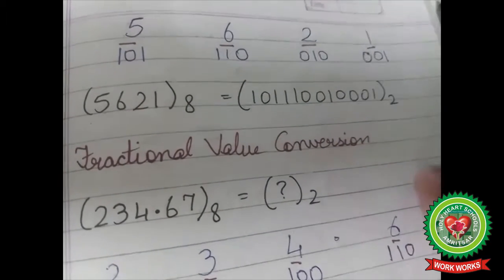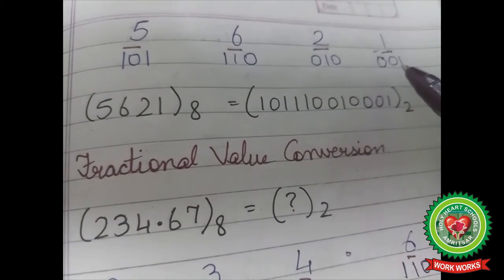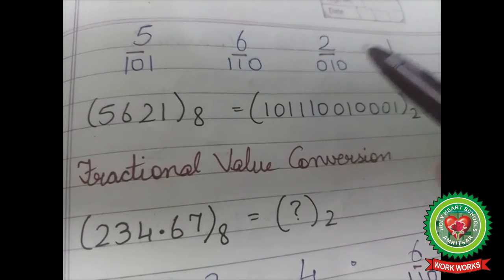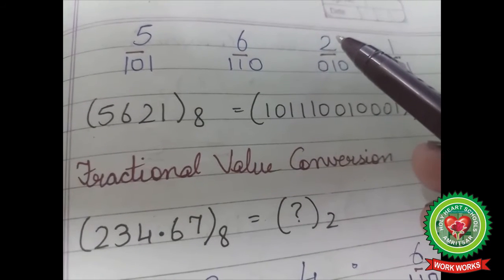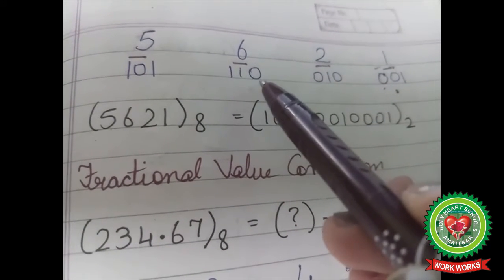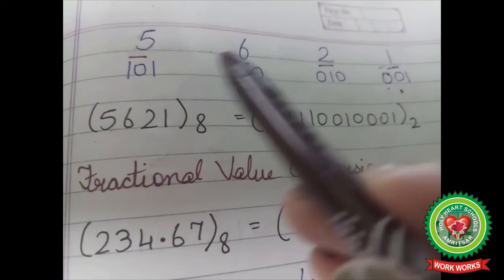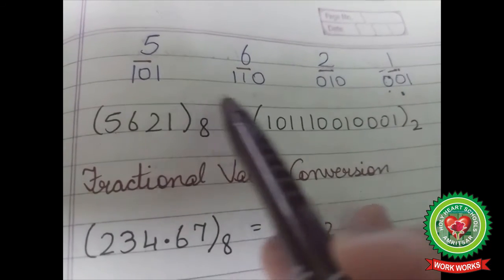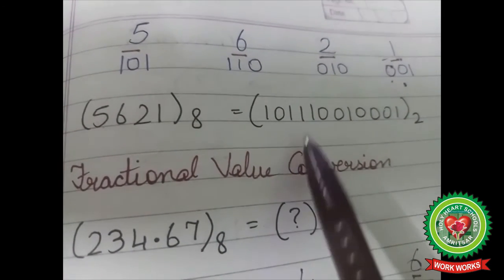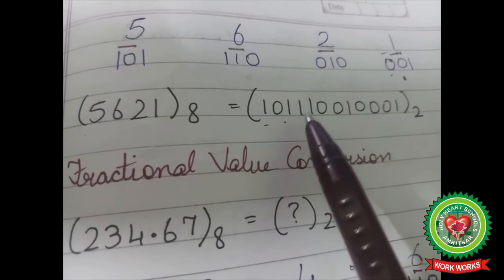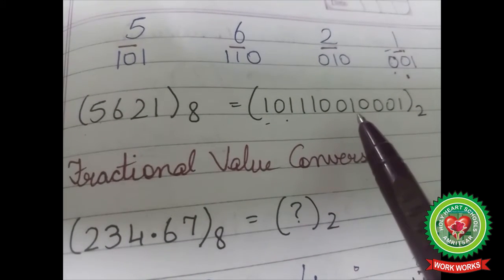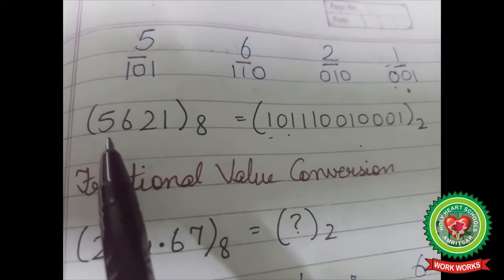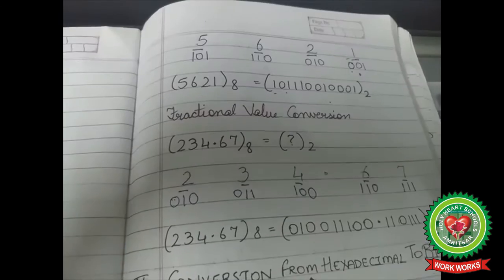We will split the number 5621 into its individual digits, then write the binary equivalent of each digit. For example: 001 is the binary equivalent of 1, 010 of 2, 110 of 6, and 101 of 5. Combining these, the binary equivalent of octal 5621 is 101 110 010 001.